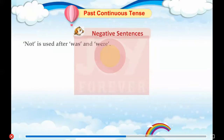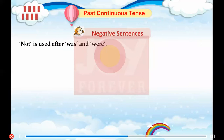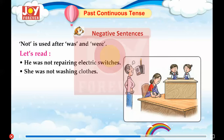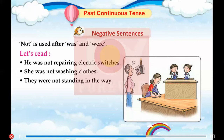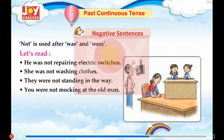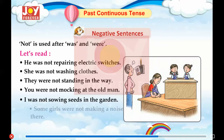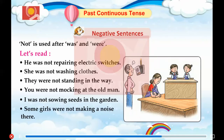Negative Sentences. 'Not' is used after 'was' and 'were'. Let's read: He was not repairing electric switches. She was not washing clothes. They were not standing in the way. You were not mocking at the old man. I was not sowing seeds in the garden. Some girls were not making a noise there.